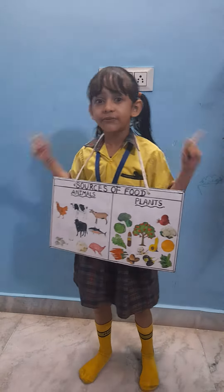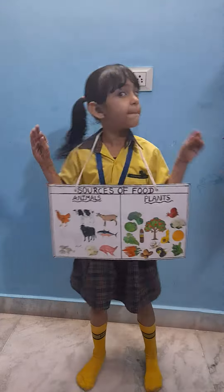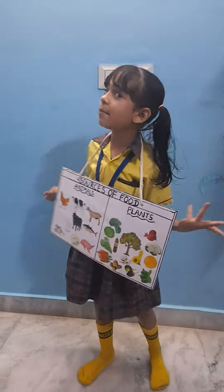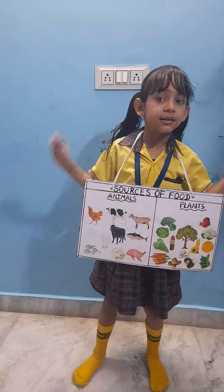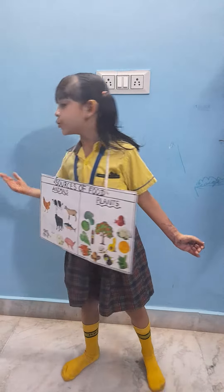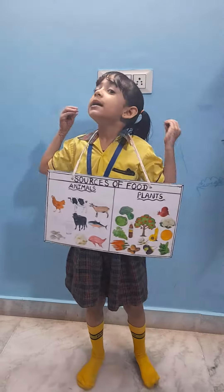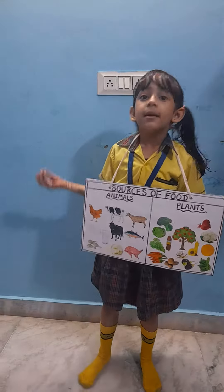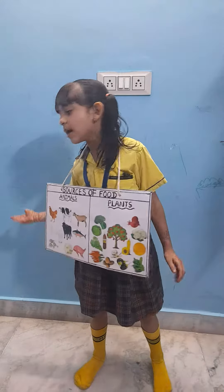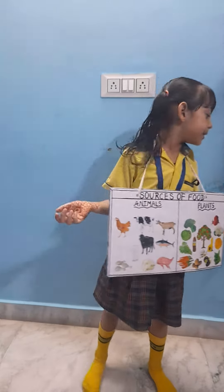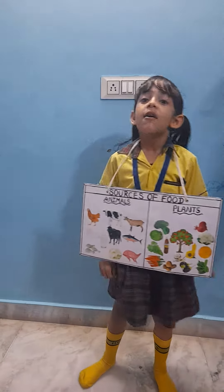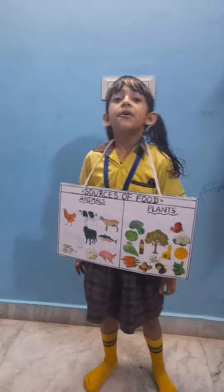Some of the food obtained from plants. Vegetables like spinach, cauliflower, beetroot and turnip. Stem like potato and ginger. Leaves like spinach and cabbage. Flour like broccoli and cauliflower.